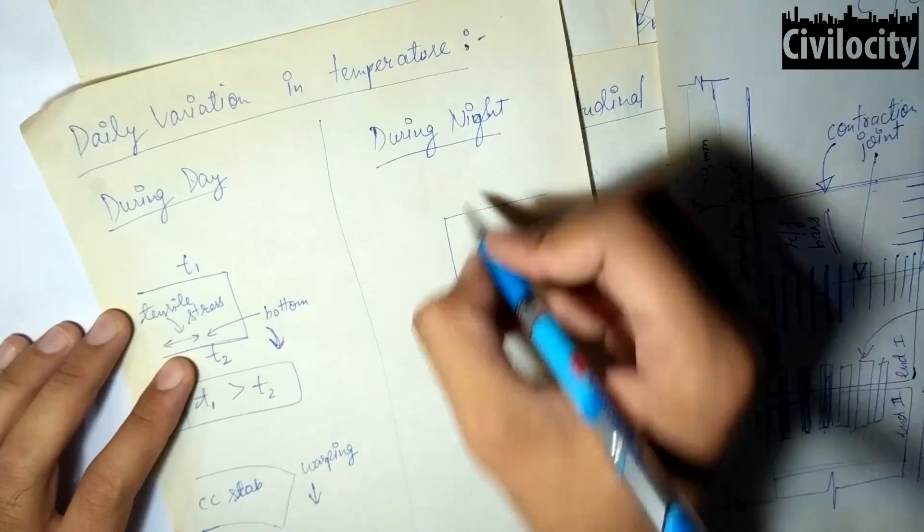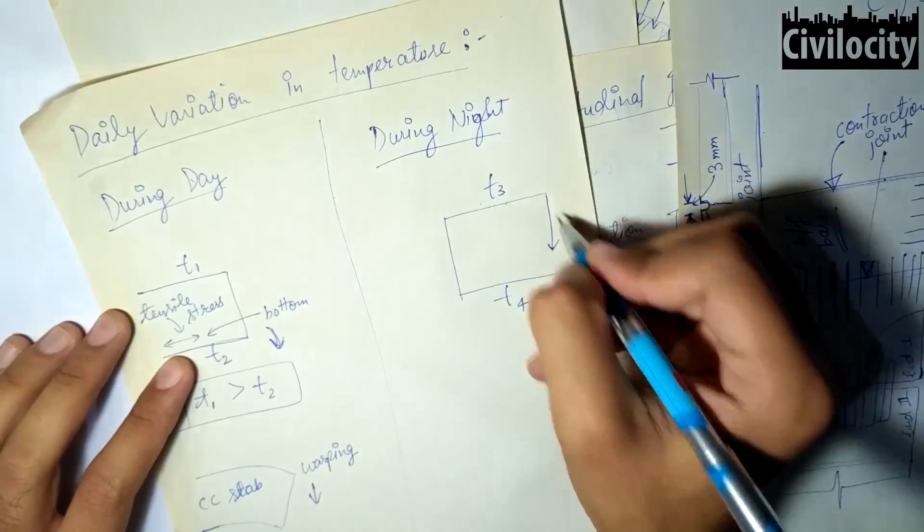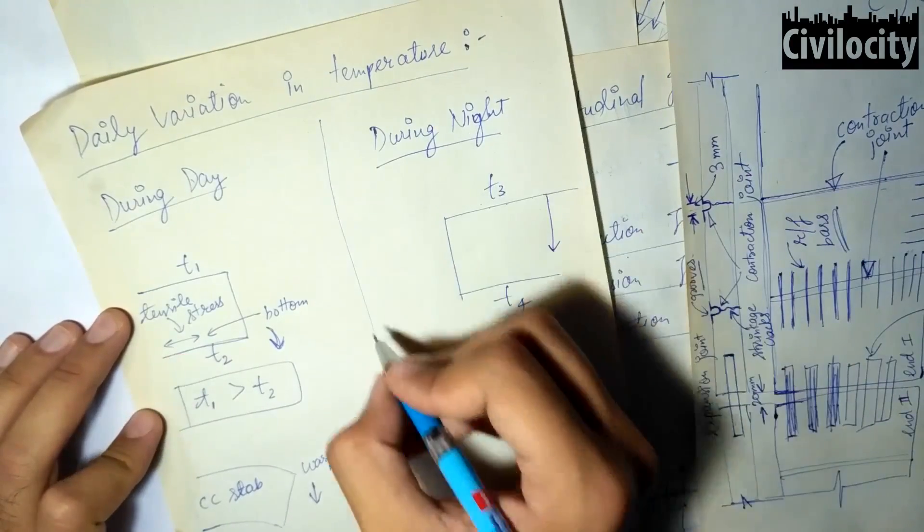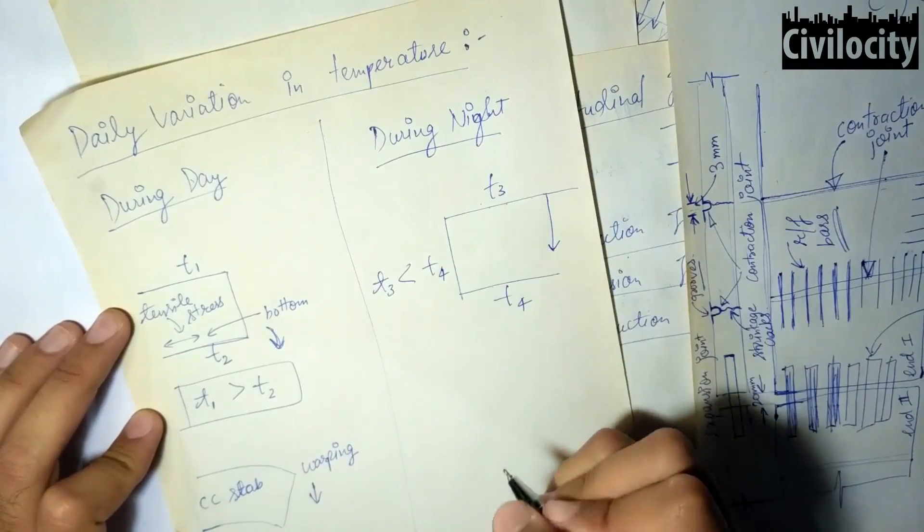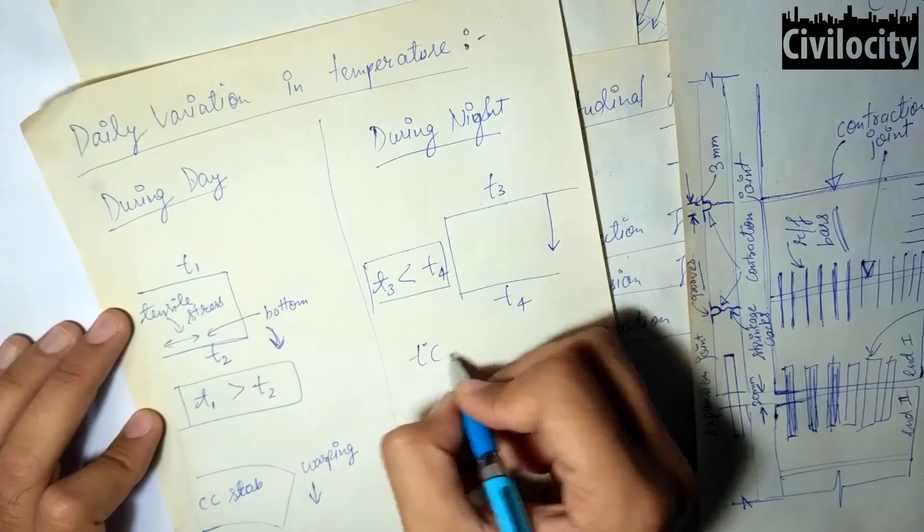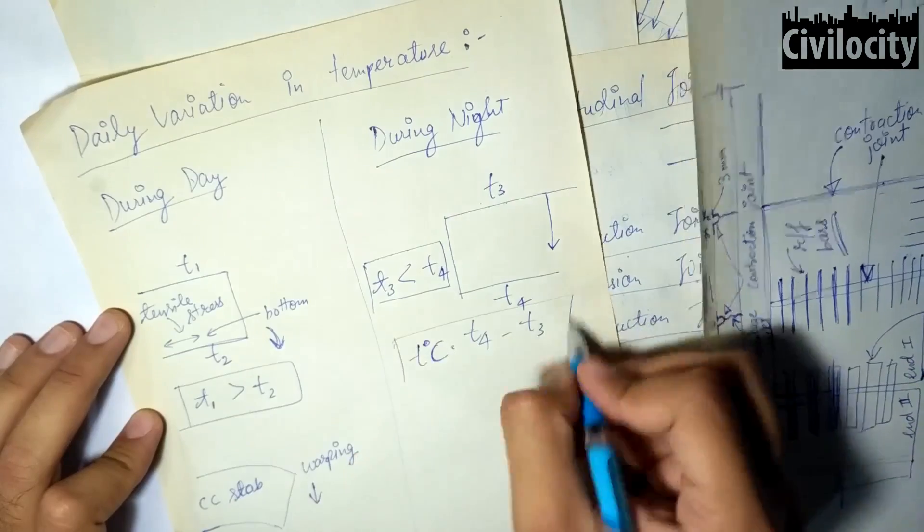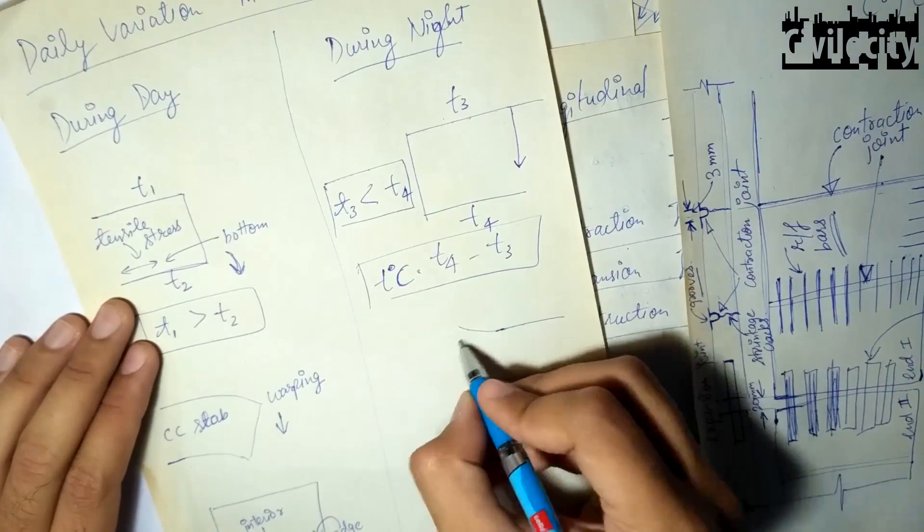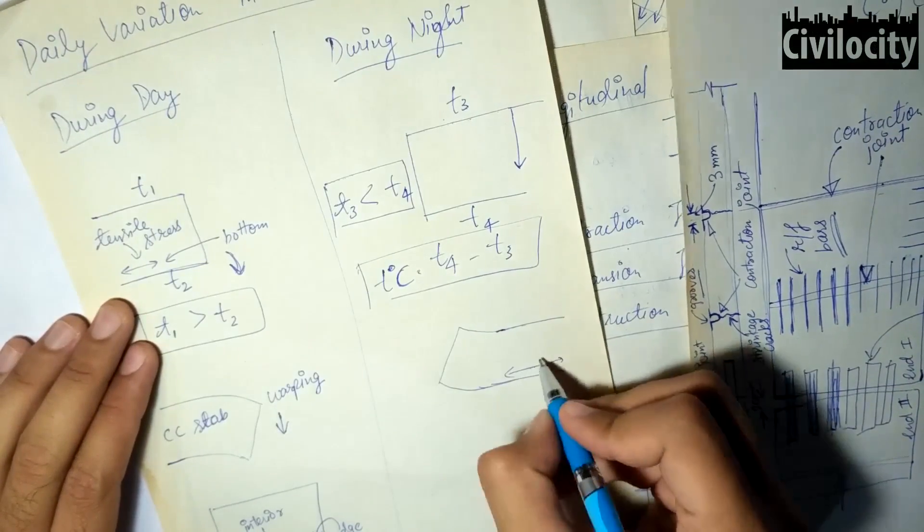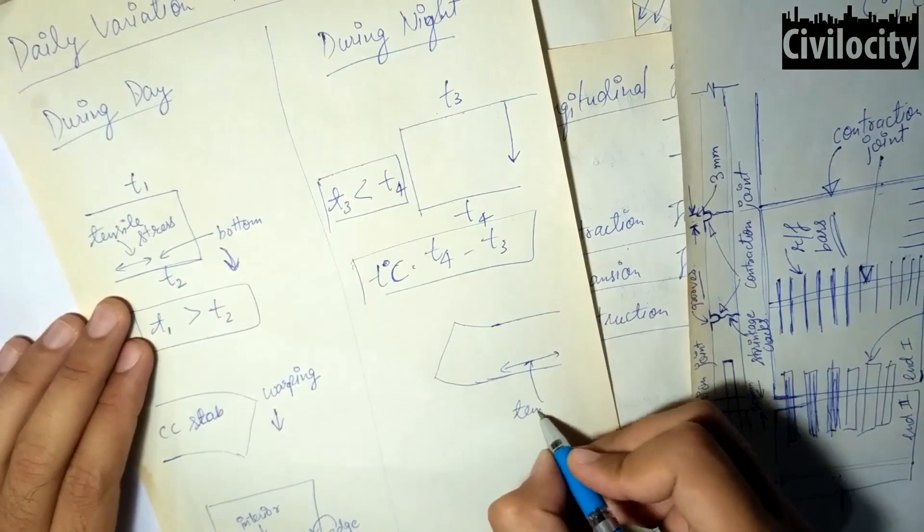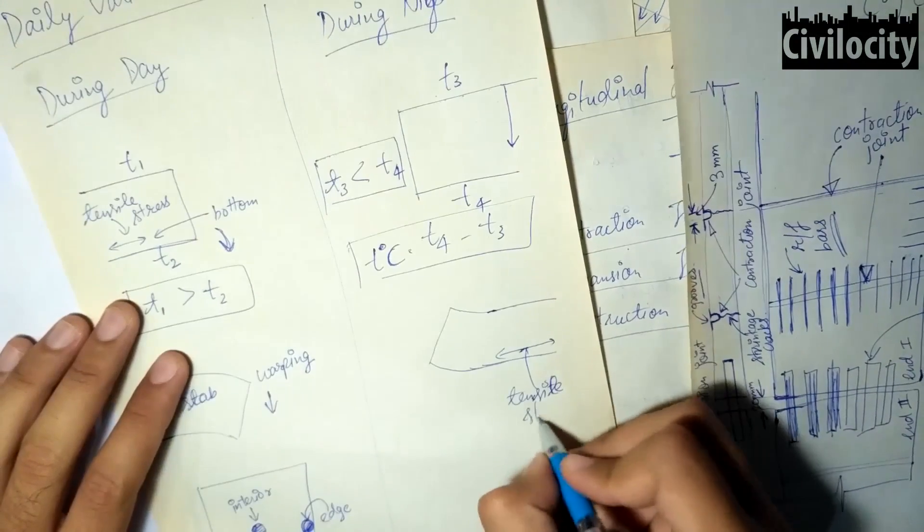Similarly, during the nighttime, the heat absorbed by the top surface of the pavement gets transferred to the bottom surface and the temperature of the top surface becomes cooler as compared to the bottom surface. During night, the bottom surface of the CC pavement remains hotter as compared to the top surface, creating a tensile stress at the bottom and making the corners warp towards the upward direction.